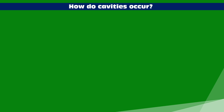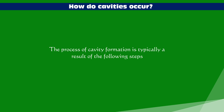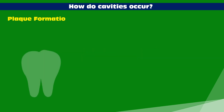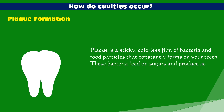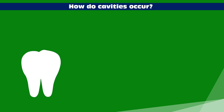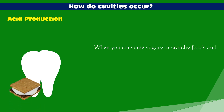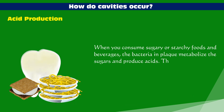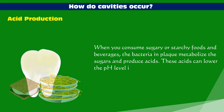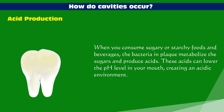How do cavities occur? The process of cavity formation typically involves the following steps. First, plaque formation: plaque is a sticky, colorless film of bacteria and food particles that constantly forms on your teeth. These bacteria feed on sugars and produce acids as a byproduct. When you consume sugary or starchy foods and beverages, the bacteria in plaque metabolize the sugars and produce acids, which lower the pH level in your mouth, creating an acidic environment.